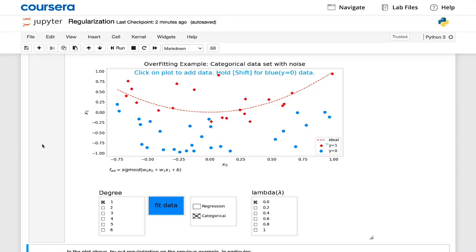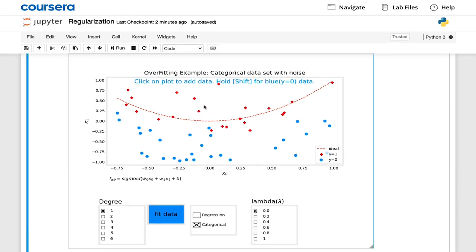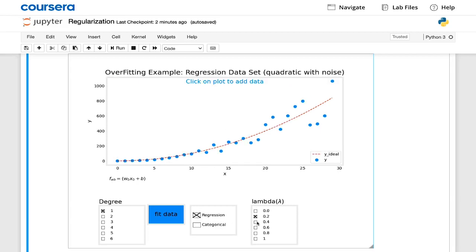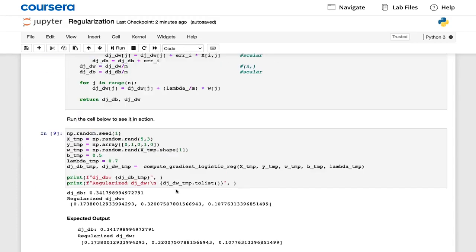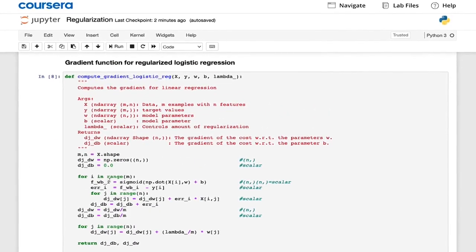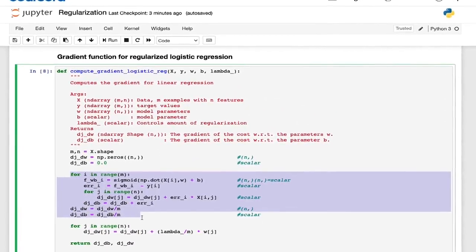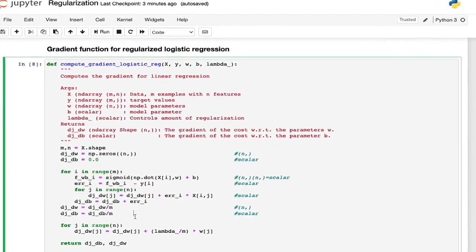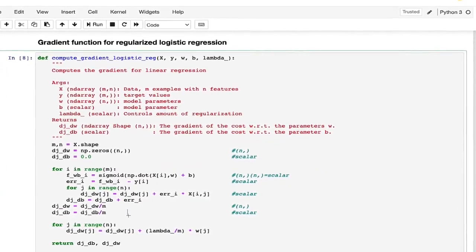In the final optional lab of this week, you revisit overfitting. And in the interactive plot in the optional lab, you can now choose to regularize your models, both regression and classification, by enabling regularization during gradient descent, by selecting a value for lambda. Please take a look at the code for implementing regularized logistic regression in particular, because you implement this in a practice lab yourself at the end of this week.